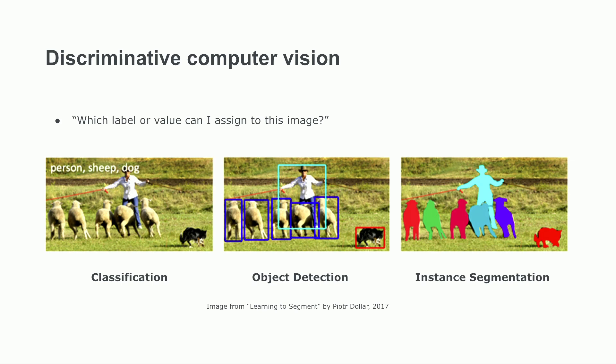We'll begin by exploring the three fundamental discriminative tasks in modern computer vision: classification, object detection, and segmentation. Discriminative models in computer vision are supervised machine learning models that assign classes or scores to images based on a labeled training set. They do this in a way that is either localized or global. Classification models assign global labels to entire images. For example, an image might be labeled as containing a person, sheep, or dog, without specifying where these objects are located in the image.